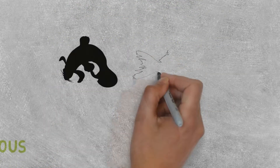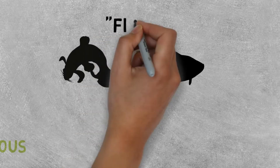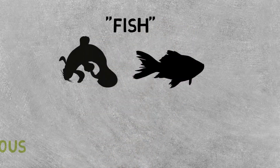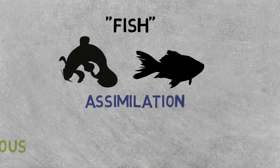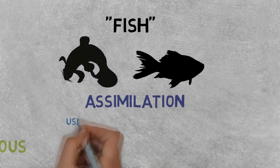There are times when placing a new object in an existing schema works fine. If you call a trout and a salmon both fish, it normally isn't a problem. This is called assimilation—when you use an existing schema to deal with a new object.